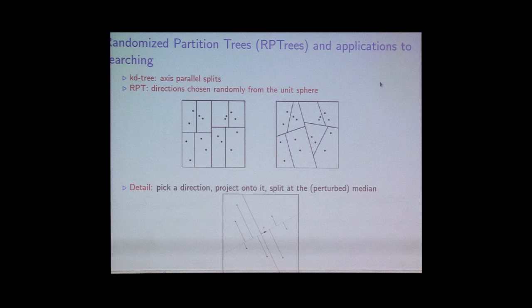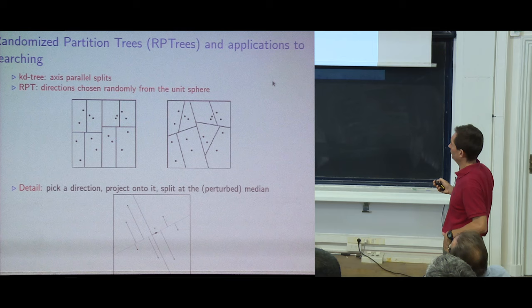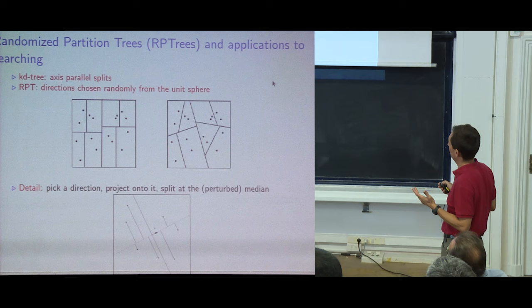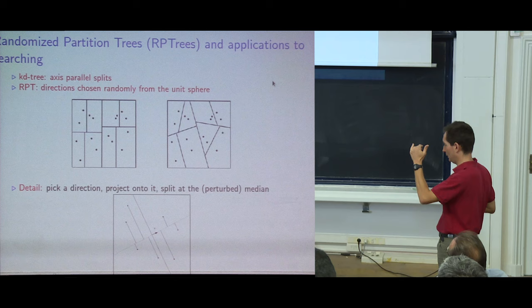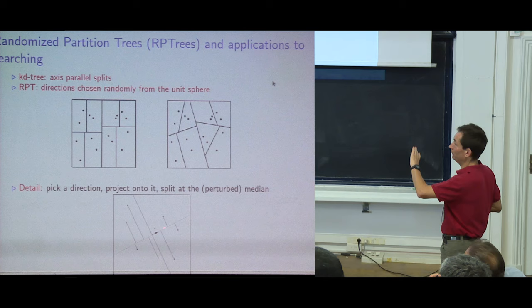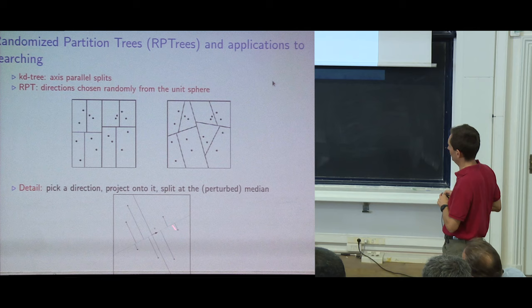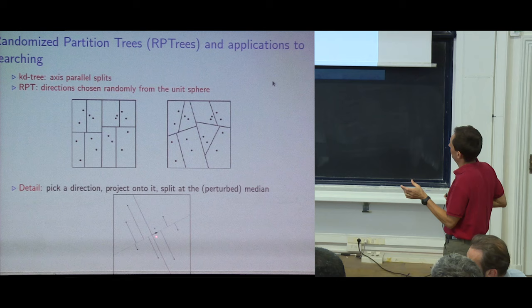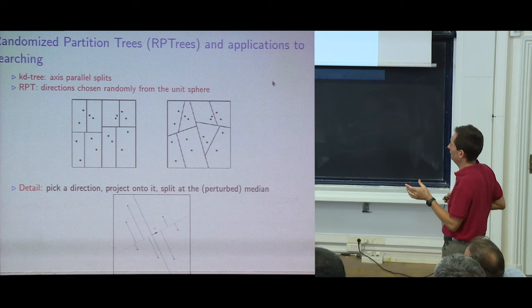In randomized KD trees, instead of axis-aligned splits, we use splits perpendicular to random directions. Project points onto a random unit vector, compute the median of the projected values, and split there. This defines the two subtrees. An example shows level-one and level-two splits with different random directions.